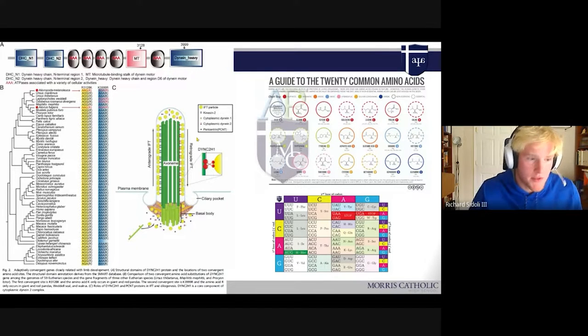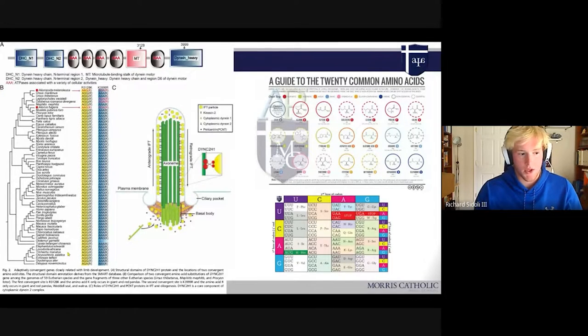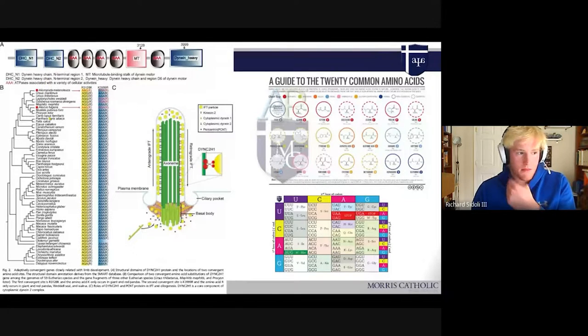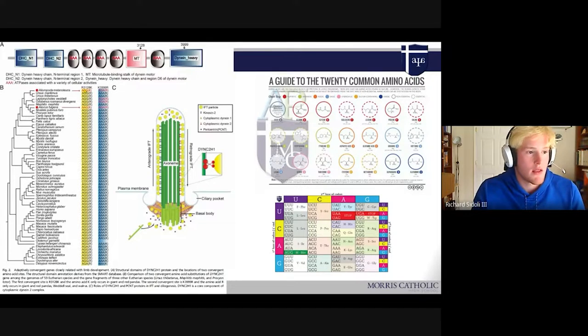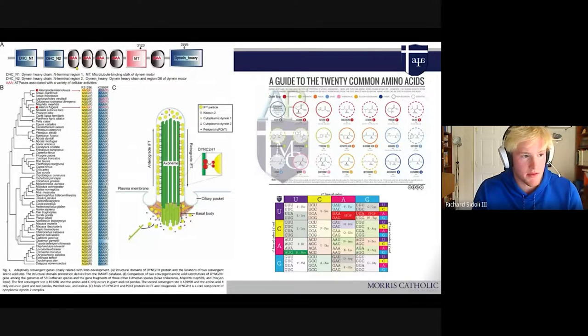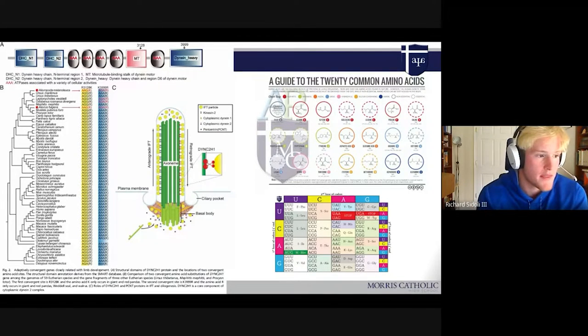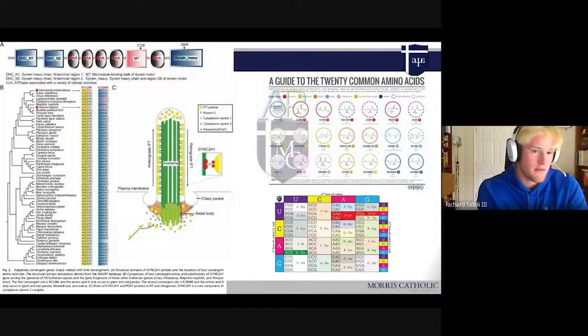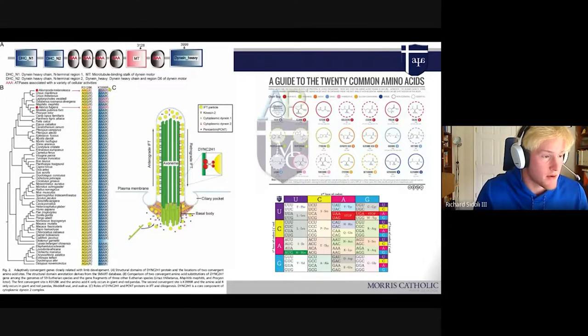This part of the figure shows like once again, a phylogenetic tree. This is like a massive compilation of all the different relatives of varying distance to the two species. At the 3,128th amino acid, which is demonstrated on this chain here, there's a mutation in both species, that's a substitution of an adenine for a guanine.